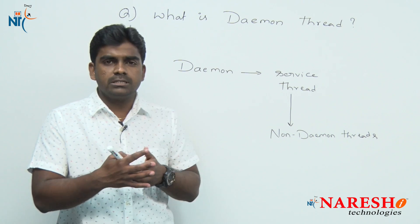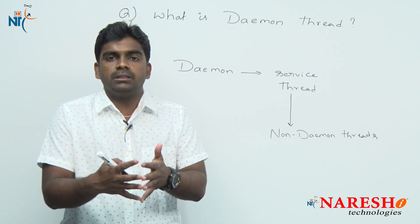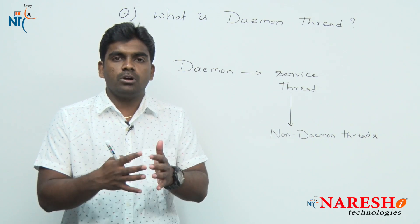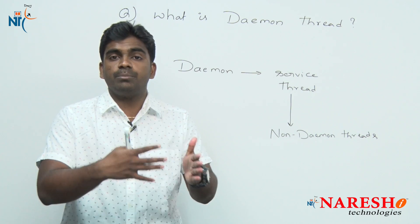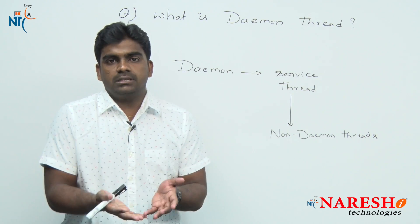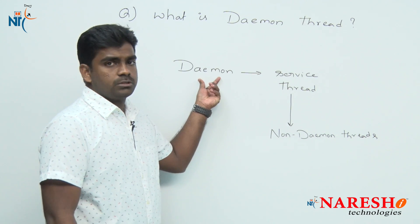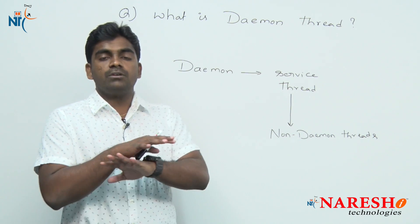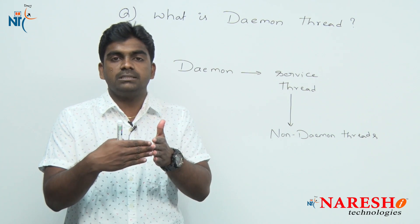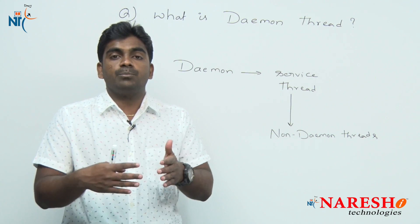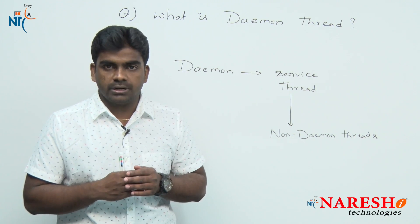The name daemon means it is an invisible thread. Daemon means an invisible thing that performs some tasks. In the same way, a daemon thread is not visible — it runs behind the application and provides service to non-daemon threads.